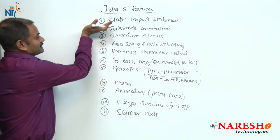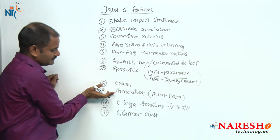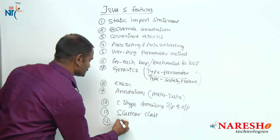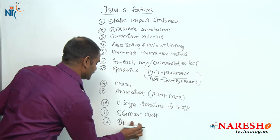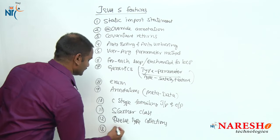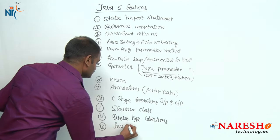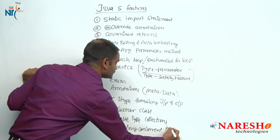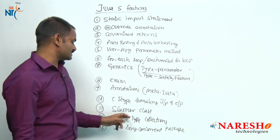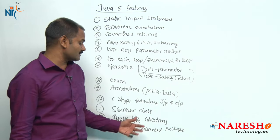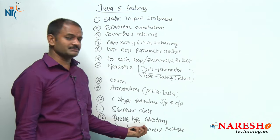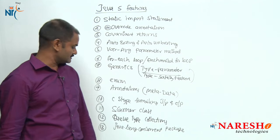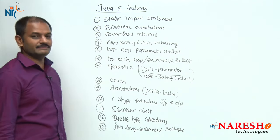Up to the ninth point, all these are language level changes. From the tenth point onwards, they are API level changes. The twelfth point is that Queue-type collections are added. The thirteenth and very important feature is that the java.util.concurrent package is added for performing collection operations with thread safety — a lot of synchronized collections are added, and the fork/join framework is also included.